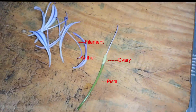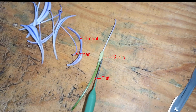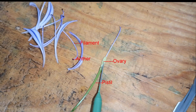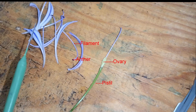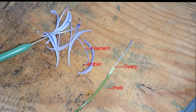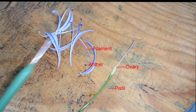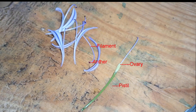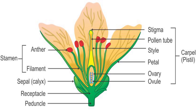The flower consists of two main parts: the first part being the stamen, the other being the pistil. The pistil is the female part of the plant, which consists of the stigma, pollen tube, style, petal, ovary, and ovule. The stamen is the male part of the plant, which consists of the anther and the filament. Other parts of the plant not in the female or male part are the sepal, receptacle, and peduncle.